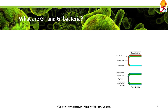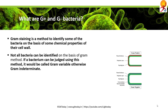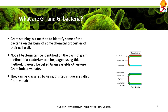What are G-plus and G-minus bacteria? Gram staining is a method to identify some bacteria on the basis of the chemical properties of their cell wall. Staining means coloring. Not all bacteria can be identified like this — the ones that can be are called gram variable, and the others are called gram indeterminate.